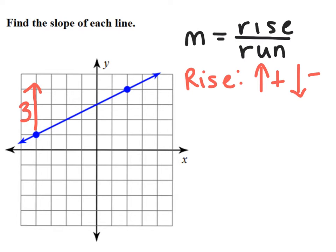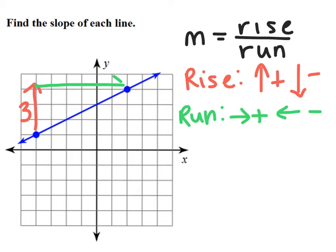The run is the movement horizontally. If I'm moving to the right, it's positive, and if I'm moving to the left, it's negative. So in this case, I'm moving from left to right: one, two, three, four, five, six units.